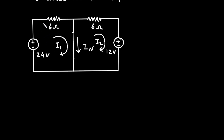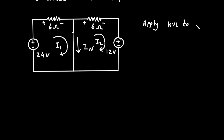Let's say this is mesh number 1 with current I1 and this is mesh number 2 with current I2. Let's assign the signs: this will be positive, this will be negative. Here this will be positive and this will be negative according to the direction of current I2. Let's apply KVL to mesh 1.